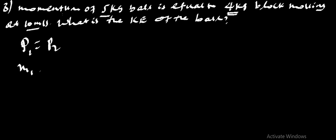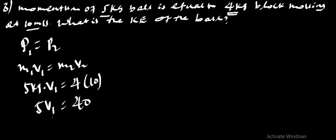Therefore, M1 V1 is equal to M2 V2. Then, M1 is 5 kg times V1. This is equal to 4 kg moving at 10, which is times 10. 5 V1 is equal to 40. Then, over 5, V1 is equal to V1.